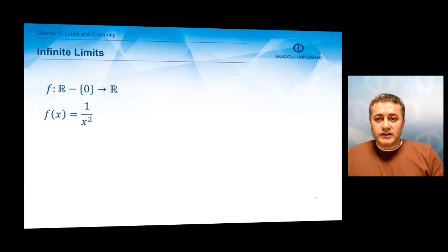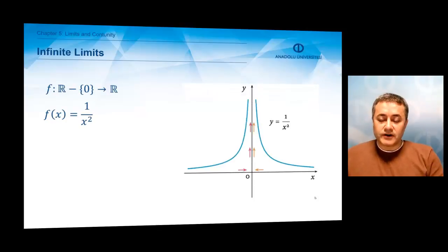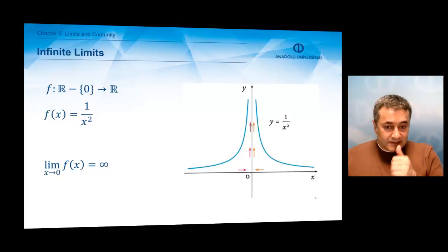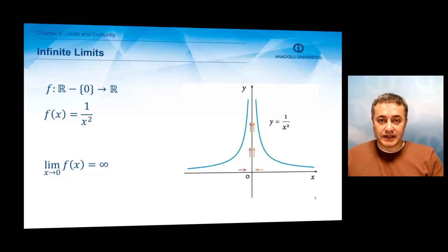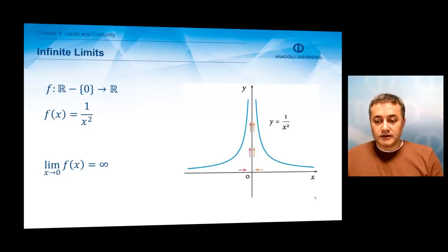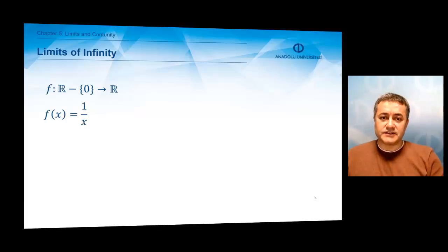We may also have infinite limits. Let's consider the function f(x) equals 1 over x squared, and let us approach x equals 0 from the left or right. If you approach x equals 0, the values of the function start increasing and increasing. As closer as you get to 0, the function will have huge and huge values. So the limit of the function f(x) approaches infinity, and we say that the limit is infinity.